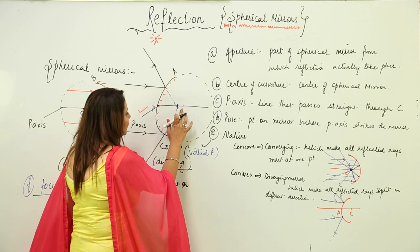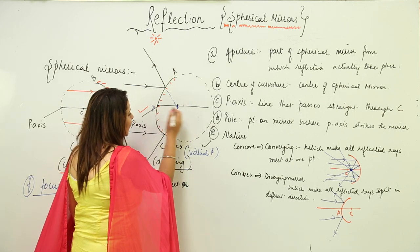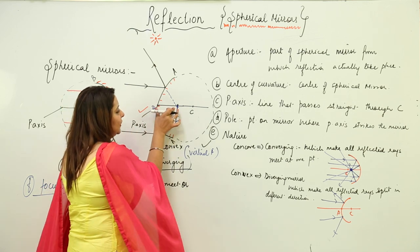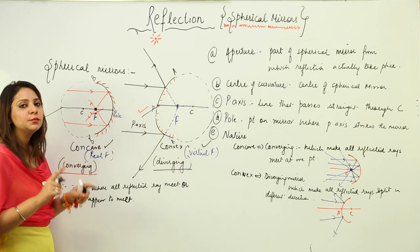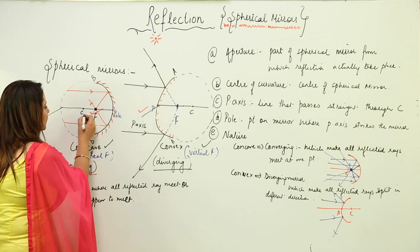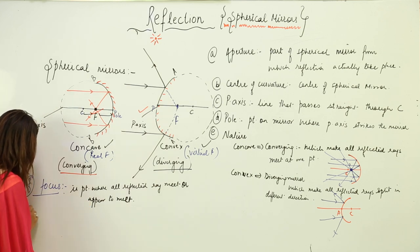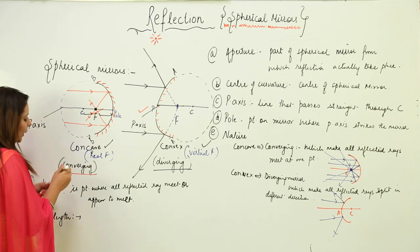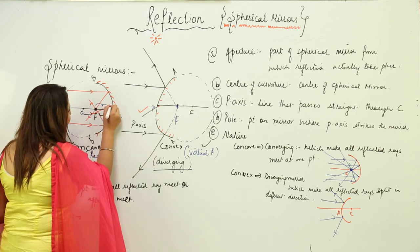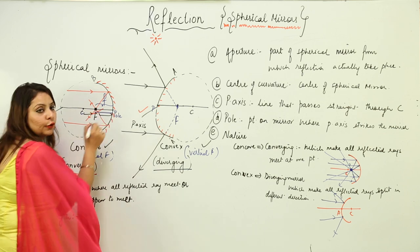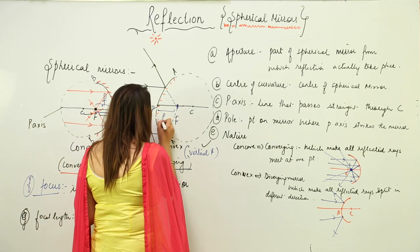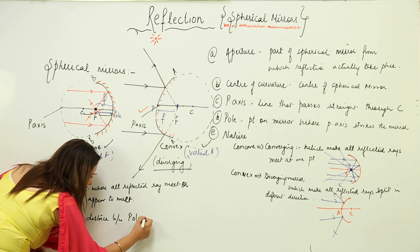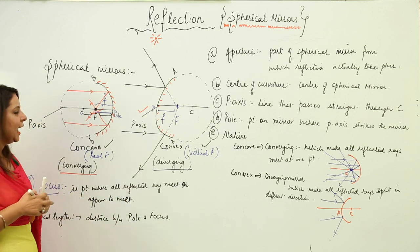One important point: the distance from the pole to the focus is exactly half the distance from the pole to the center of curvature. When drawing, use a scale to show these distances clearly. The distance between the pole and the focus is called the focal length. So focal length is the distance between the pole P and the focus F.